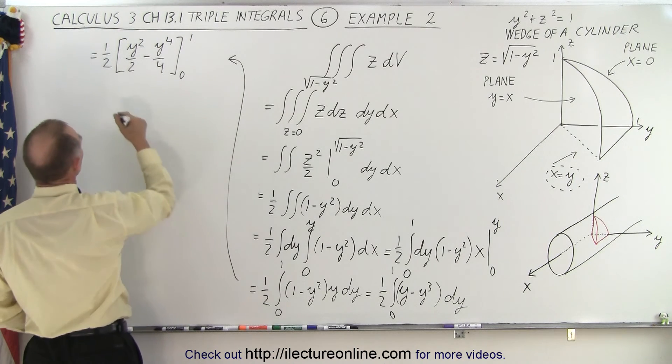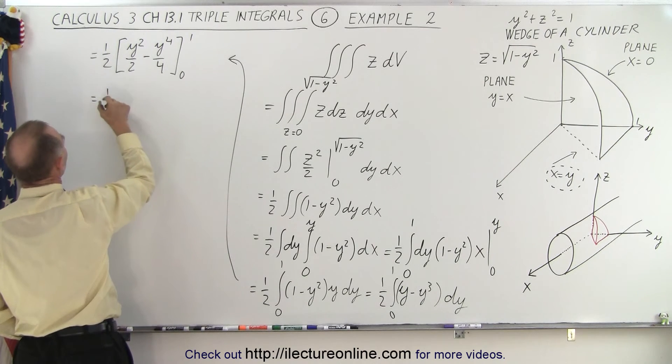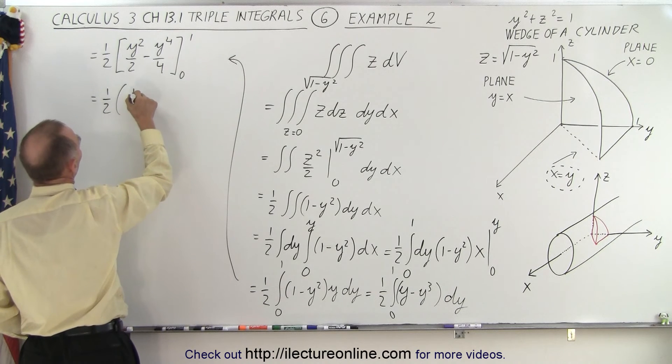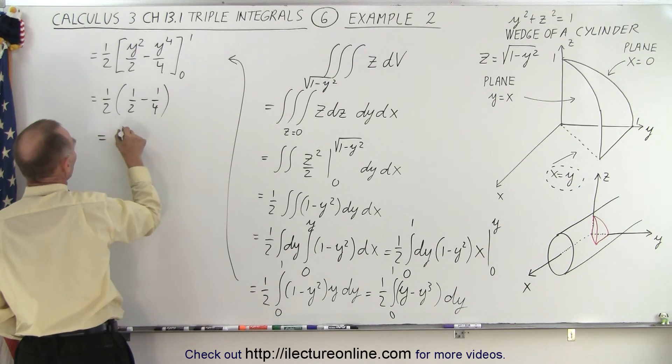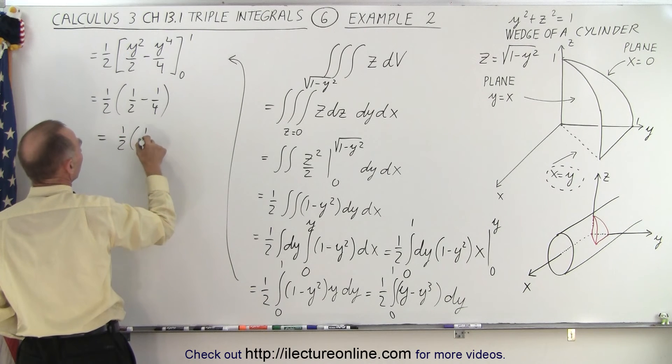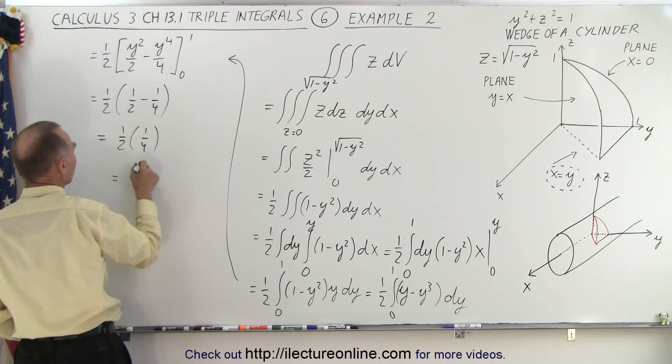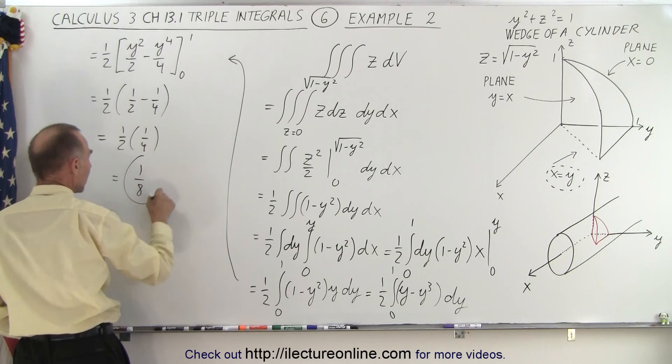Plug in the lower limit we get nothing, but plug in the upper limit we get one half times one half minus one fourth. Of course that's equal to one half times one fourth which is equal to one eighth.